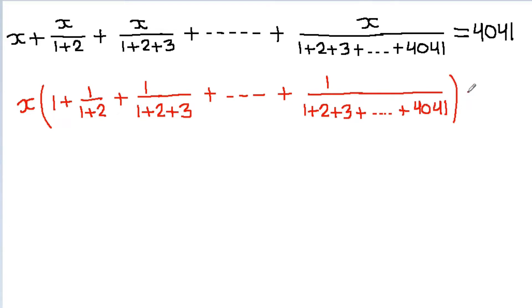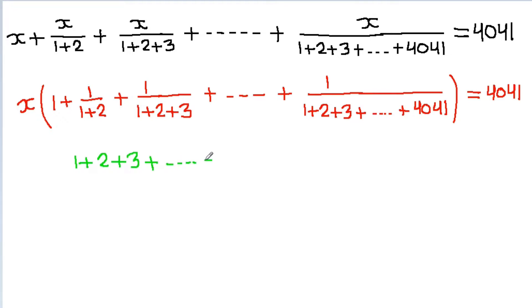That is equal to 4041. Now we know that 1 plus 2 plus 3 plus up to n is equal to n(n+1) by 2.